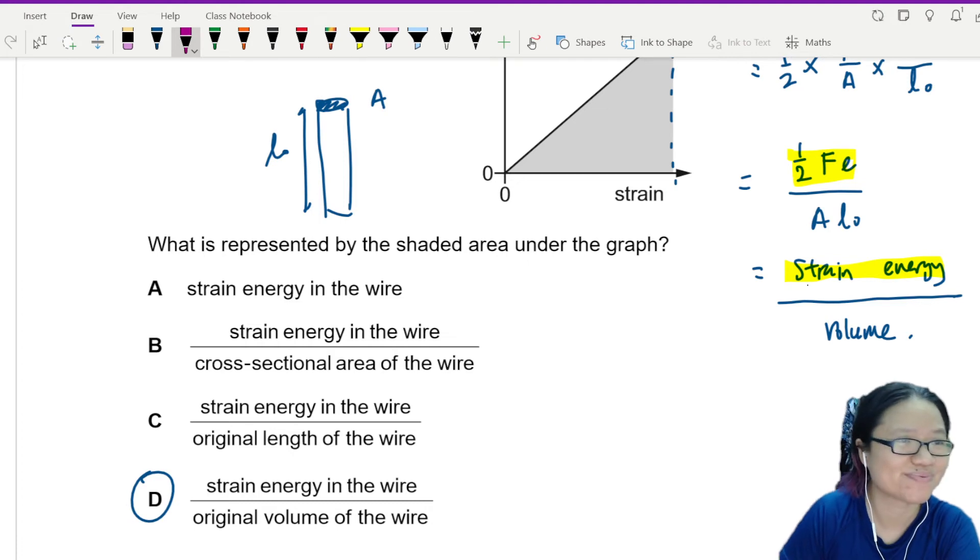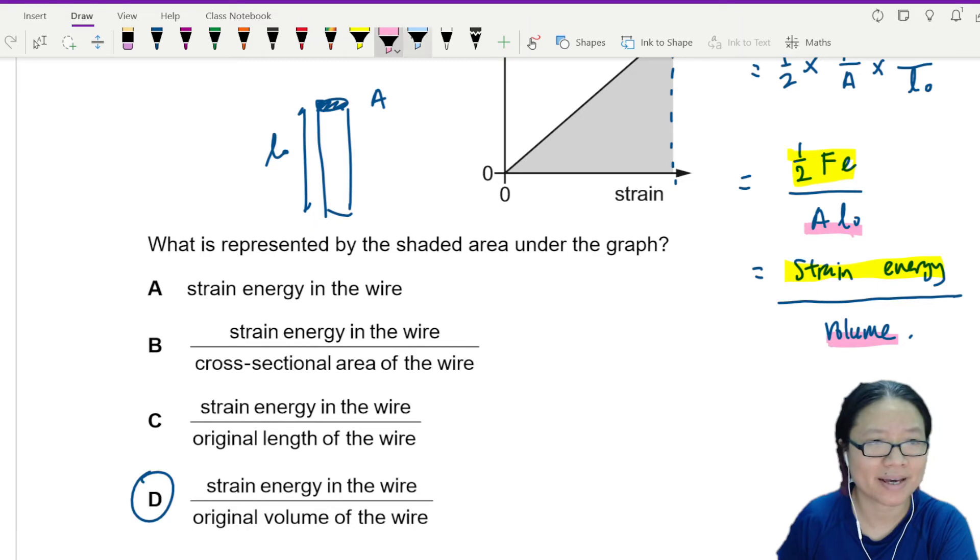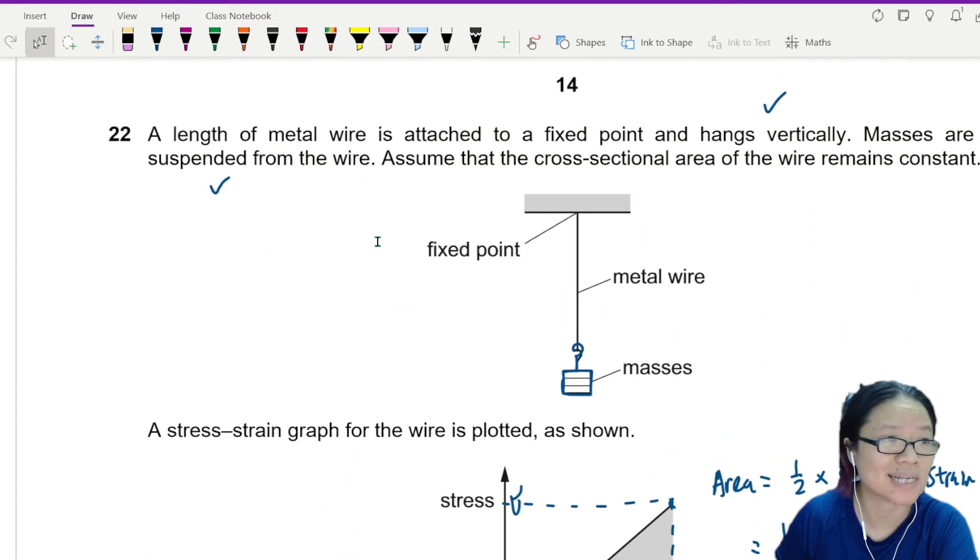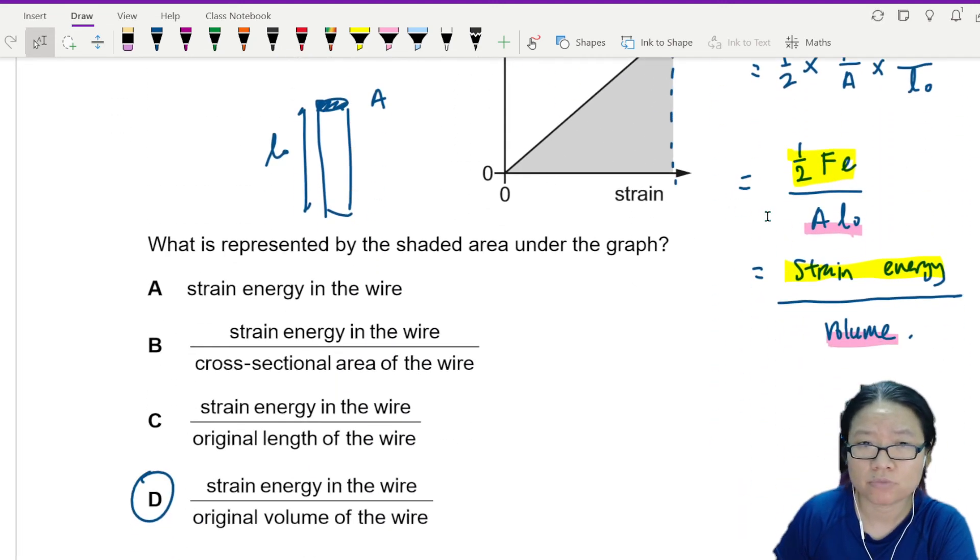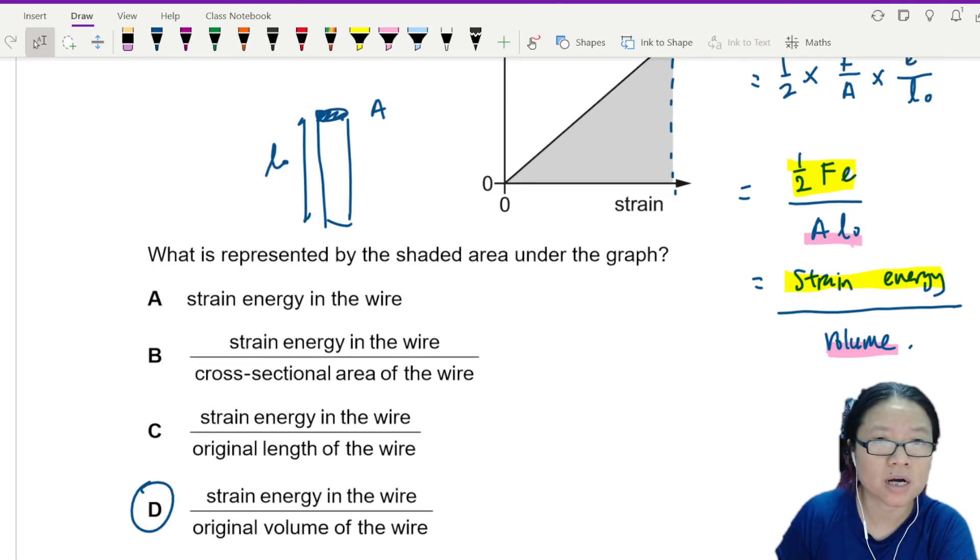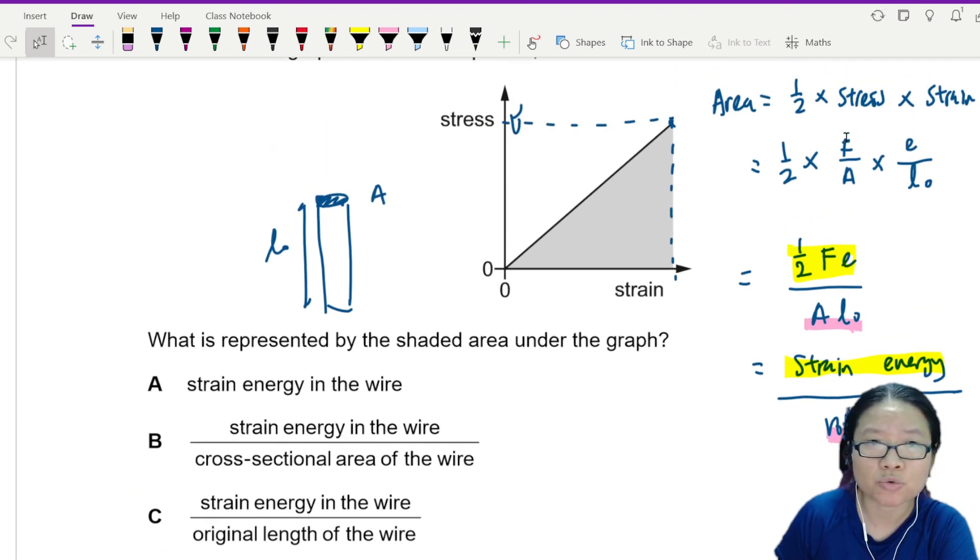So AL is volume. Furthermore, it also says here that the area remains constant. We're making the assumption. So in this case, you see down here is volume.